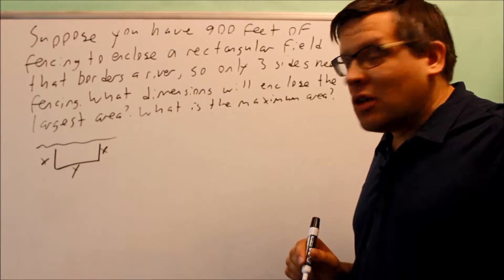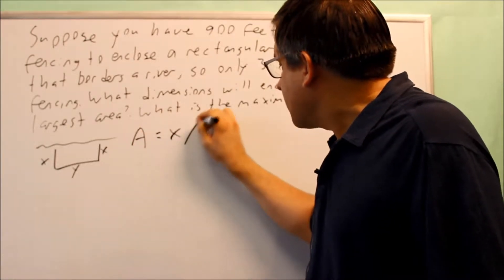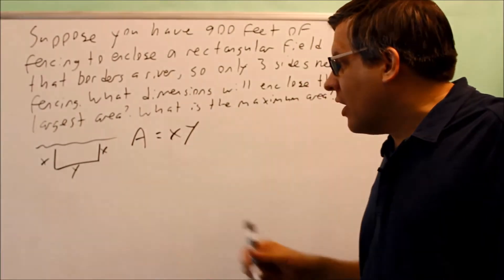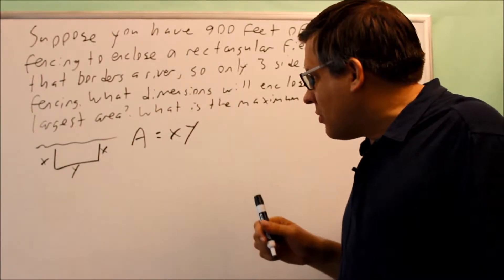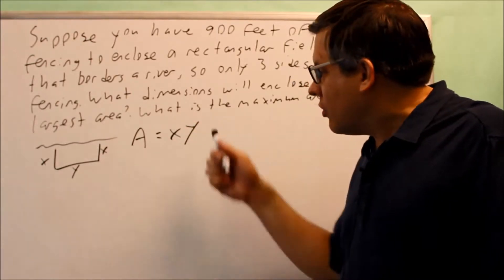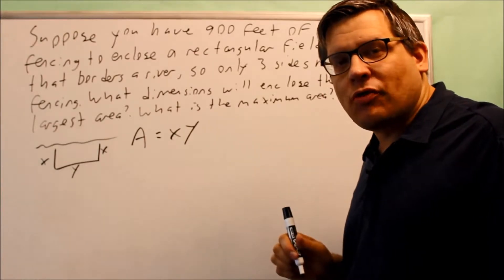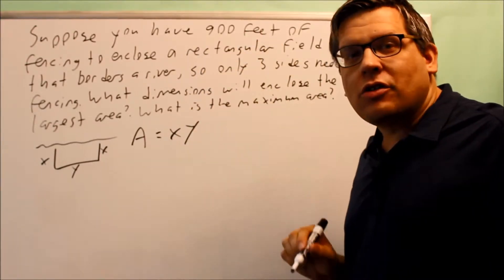We want to come up with a couple of formulas and then plug one into the other. The first one is, since it's asking us for area based on our picture, we have area equals x times y. That's fine except that I have an extra y here and I can't really do anything with this formula in this form.